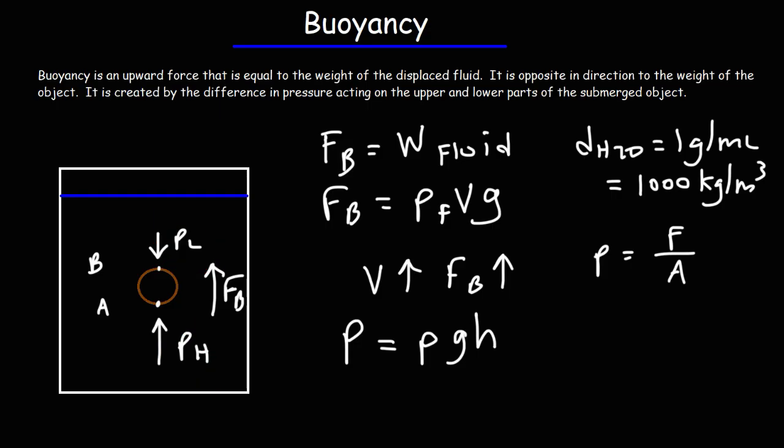The concept of buoyancy is related to why certain objects sink in water, whereas other objects float in water. And the real answer is due to the relative density between the object and the fluid that it is submerged in. In the case of water, if we were to put an object that has a higher density than water, that object is going to sink. If we put an object that has a lower density than water, it's going to float.